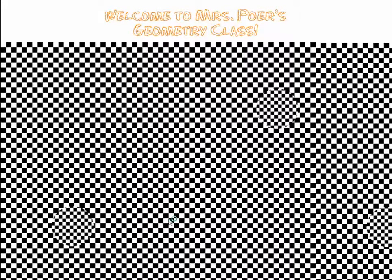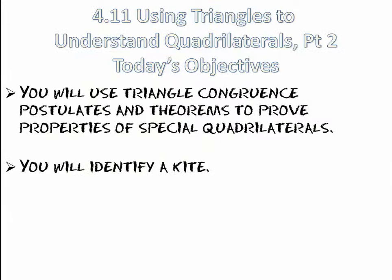Hello and welcome to this video of lesson 411, Using Triangles to Understand Quadrilaterals, Part 2. Today's objective is that we're going to use triangle congruence postulates and theorems to prove properties of special quadrilaterals. And you're going to learn to identify a kite.